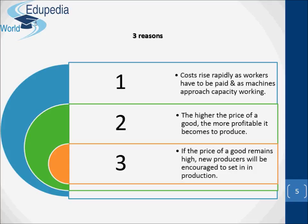This raises the cost of producing extra potatoes. It is the same for manufacturers. Beyond a certain level of output, costs are likely to rise rapidly as workers have to be paid overtime and as machines approach capacity working. If higher output involves higher costs of producing each unit, producers will need to get a higher price if they are to be persuaded to produce extra output.